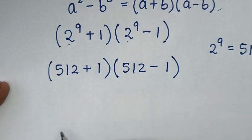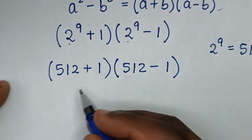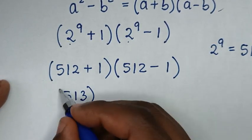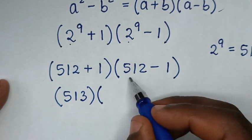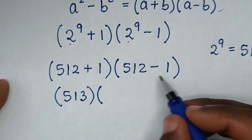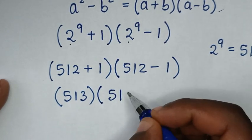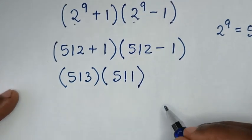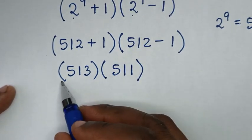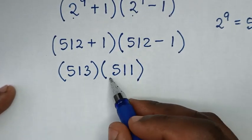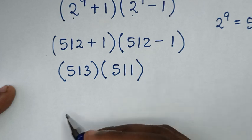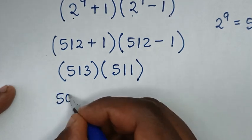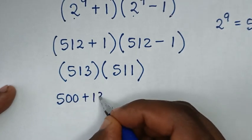In the next step, 512 plus 1 is 513 bracket, then times bracket 512 minus 1 which is 511 bracket. Now to easily multiply this, 513 times 511: 513 is the same as 500 plus 13 bracket, then times bracket 511 which is the same as 500 plus 11 bracket.